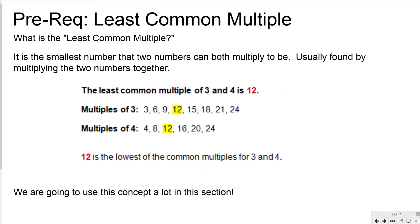The prerequisite skill for this section is you need to know what a least common multiple is. We covered that in unit 3 and I'm reviewing it because we need this skill. Remember that it's the smallest number that two numbers can both multiply to reach. For example, 3 and 4 can both multiply by something to be 12, and they can also reach 24, but 12 is smaller so it's the least common multiple.